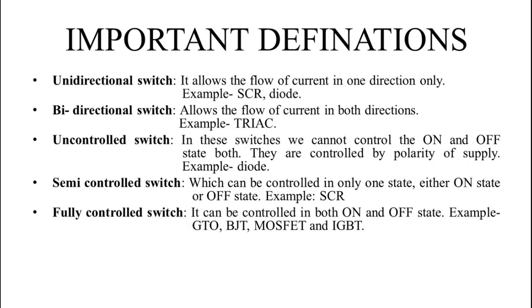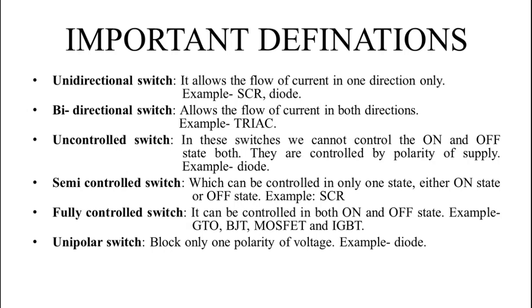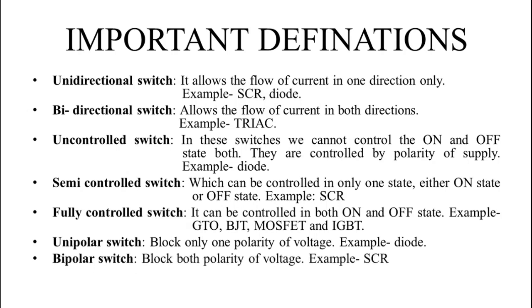Examples of fully controlled switches are triac, GTO, BJT, and MOSFET. Next is unipolar switches — it blocks one polarity of voltage. Example is diode. Diode blocks the reverse voltage, so it allows the forward voltage — that is why it is a unipolar switch. Next is bipolar switch — it blocks both polarities of voltage. Example is silicon controlled rectifier. It blocks forward voltage in forward blocking mode and reverse voltage in reverse blocking mode, so it is a bipolar switch.